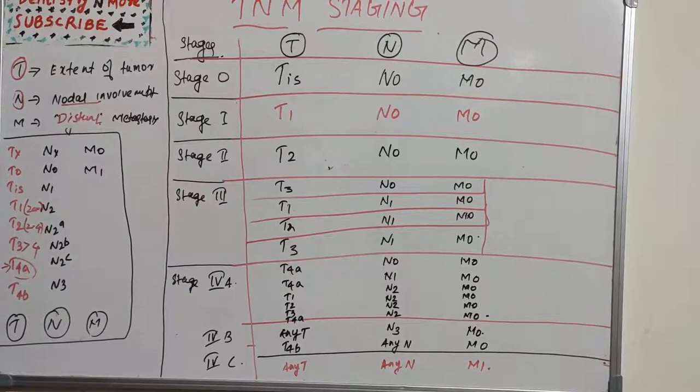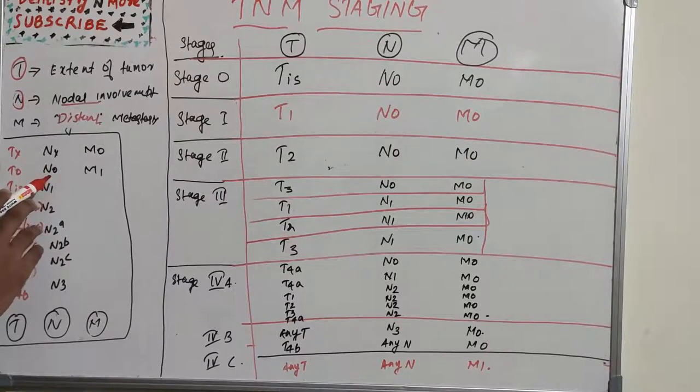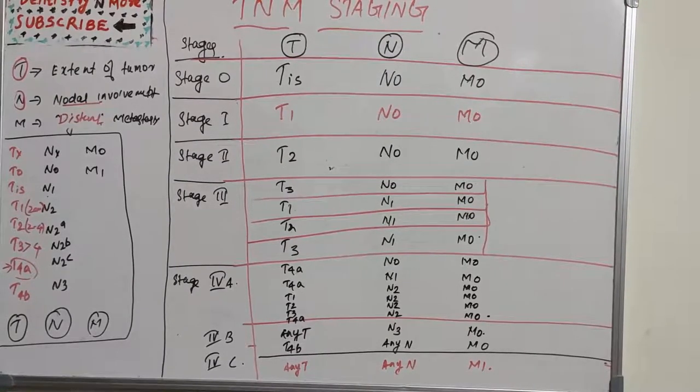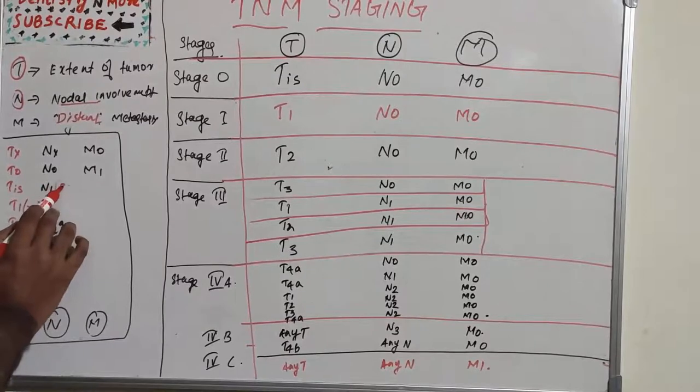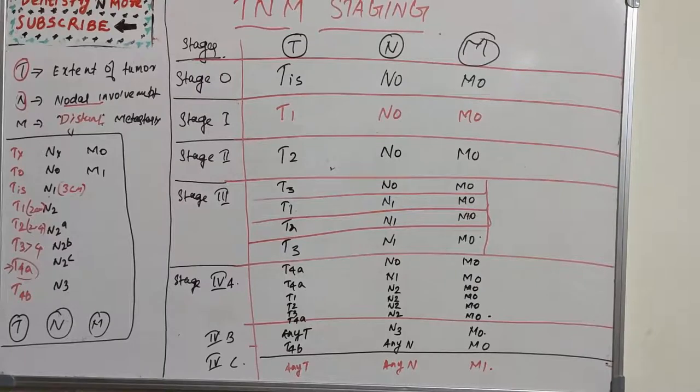Nodal involvement includes NX, N0, N1, N2, N2A, N2B, N2C, and N3. NX is regional lymph nodes cannot be assessed. N0 is no regional node metastasis. N1 is metastasis in a single ipsilateral lymph node, 3 centimeters or less in greatest dimension.